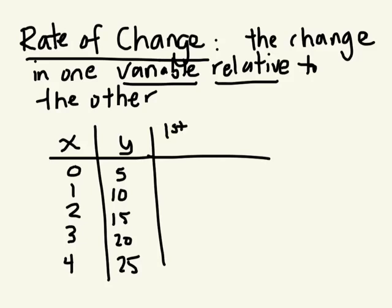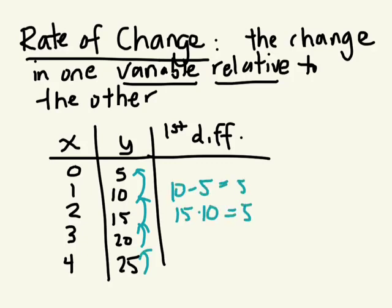For the y values, the first difference is 5. Good. First differences, we're looking at the difference between these consecutive values. So we have 10 take away 5, 15 take away 10, 20 take away 15, and 25 take away 20.